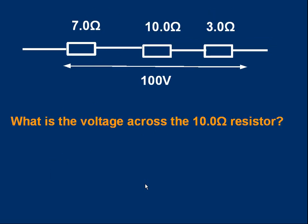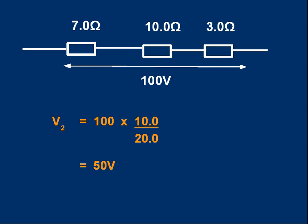Here's a final problem for you to try. You can apply the potential divider concept for more than two resistors. So my question is, what is the voltage across a 10 ohm resistor in the above circuit? Pause if you want to think about it. And the answer is very simple. It's 50 volts. Why? Well, the total resistance is 7 plus 10 plus 3. It's 20 ohms. So look at the formula. V2, the middle voltage, would be 100 volts. That's the original full voltage times a fraction 10 over 20. That gives 50 volts.